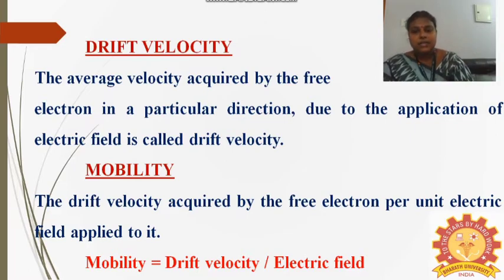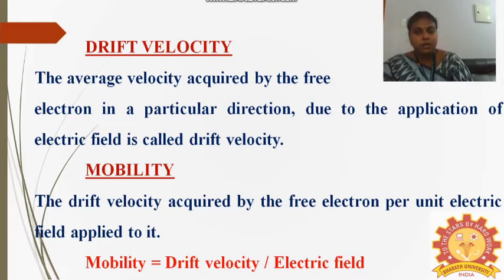Another important term is mobility. The mobility is the drift velocity acquired by the free electron per unit electric field applied to it. This mobility represents the movement of electrons in the presence of electric field. Mobility can be represented as: mobility is equal to drift velocity divided by electric field.